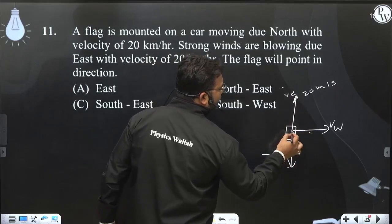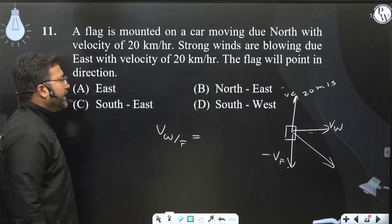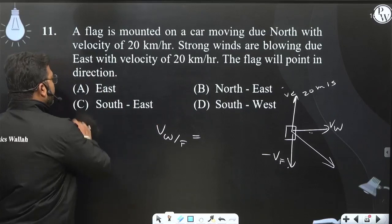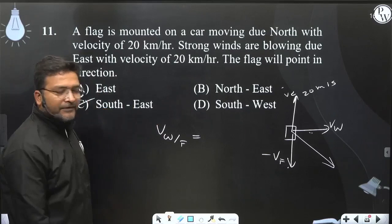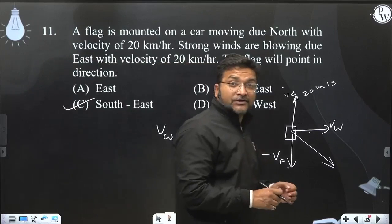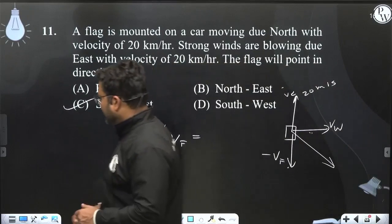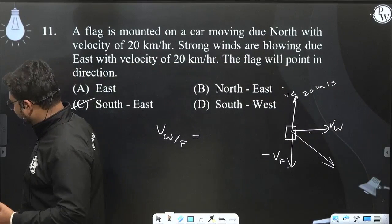We add the 20 and 20 vectors, giving us the relative velocity, and the answer is south-east. South-east is the right answer. The flag always flutters in the direction of the relative velocity of the wind with respect to the flag, or the vehicle on which the flag is mounted.